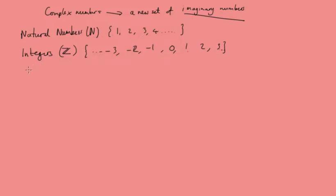Then, as people like Pythagoras came along, they began to realise we also had numbers that weren't numbers we would count with — we had fractions, all these numbers in between 1 and 2, and 2 and 3, and 0 and 1 that you could write as a fraction. That brings us to rational numbers.